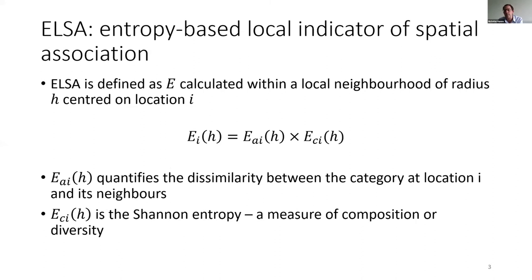ELSA is an Entropy-Based Local Indicator of Spatial Association. We define E within a neighbourhood of location I, a neighbourhood defined by the radius H. It is comprised of two components: the dissimilarity EA — the dissimilarity between I and its neighbours — and the Shannon entropy, which we can think of as a measure of composition or diversity within the local neighbourhood.